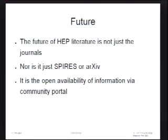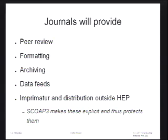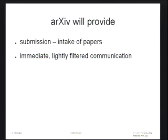The future of HEP is not just journals, not just Spires, not just Archive — it's really open availability of information. The HEP community believes in these community portals; that's what they use. Journals provide services like peer review and archiving. What is really important about SCOAP3 is that it makes these explicit and protects them. These are the services we need to protect, and if you look at the behavior of HEP physicists, these are the services they use. Archive provides intake of papers and this immediate, lightly filtered communication that physicists have already shown they actually use — this is the communication style high-energy physicists prefer.